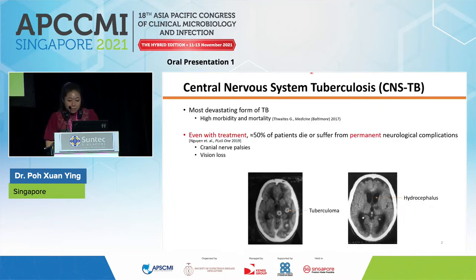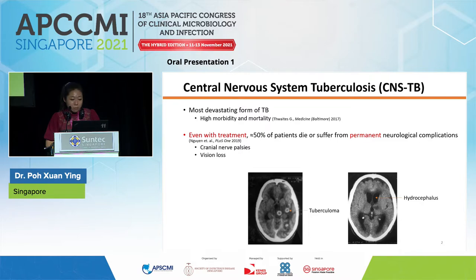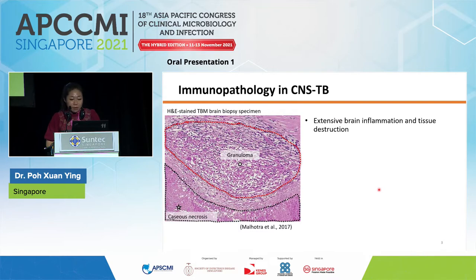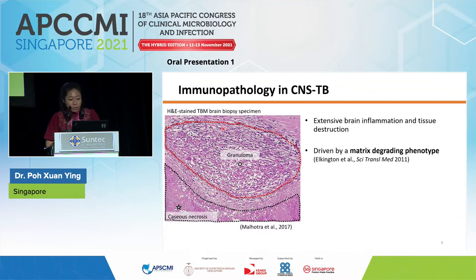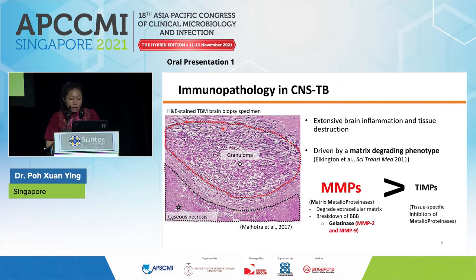CNS TB caused by Mycobacterium tuberculosis is the most devastating form of TB with high morbidity and mortality. Even with treatment, about 50% of patients die or suffer from long-term neurological sequelae such as cranial nerve palsies and vision loss. CT scans show clinical manifestations characteristic of CNS TB, including tuberculoma and hydrocephalus. Immunopathology is characterized by extensive brain inflammation and tissue destruction, featuring caseous necrosis with leukocyte infiltration forming the granuloma. This is driven by a matrix-degrading phenotype resulting from increased levels of matrix metalloproteinases relative to their tissue inhibitors, or TIMPs.